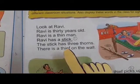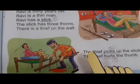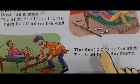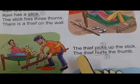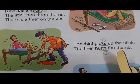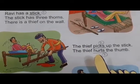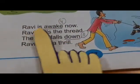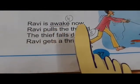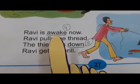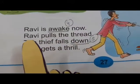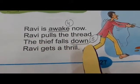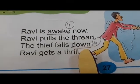There is a thief on the wall. The thief picks up the stick — underline the word 'picks', write down number two. The thief hurts the thumb — underline the word 'hurts', write down number three. Ravi is awake now — underline the word 'awake', write down number four. Ravi pulls the thread. The thief falls down — underline the word 'down', write down number five.